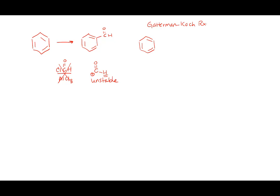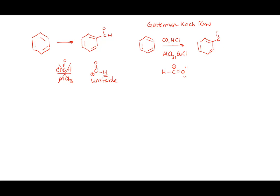The Gattermann-Koch reaction requires carbon monoxide, HCl, aluminum trichloride, and copper chloride. Basically, this generates the acyl carbocation in situ so that it's able to add to the benzene ring. This is a direct reaction to form benzaldehyde — Friedel-Crafts won't work here, but Gattermann-Koch will.